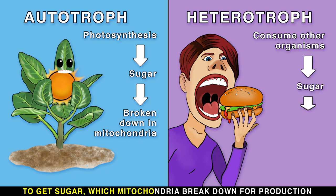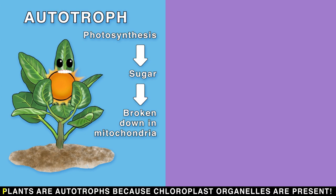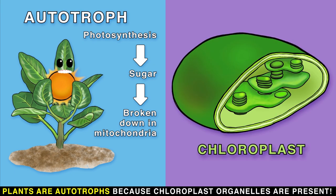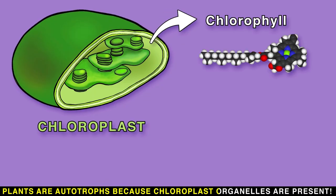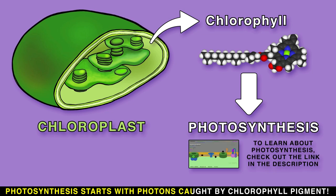To get sugar, which mitochondria break down for production of ATP — the energy unit the cell needs to function. Plants are autotrophs because chloroplast organelles are present. Photosynthesis starts with photons caught by chlorophyll pigment.